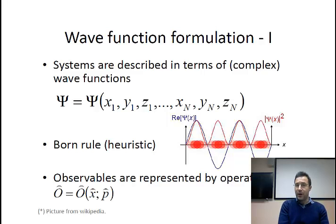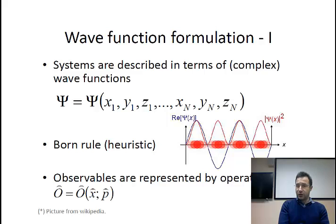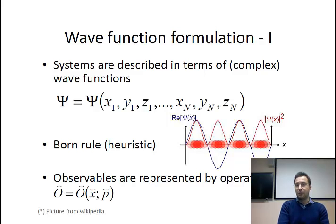There is no way in nature to actually measure a wave function. The only thing you can do with this wave function — and this is where we have the Born rule, which is a heuristic rule — is to take the wave function, take the square of the modulus, and this gives you the probability of finding a particle in a particular position. This is the only thing you actually do in practice: you calculate macroscopic variables by means of the Born rule.